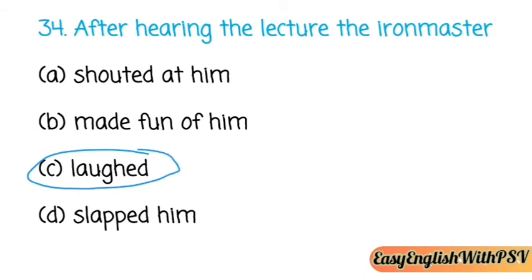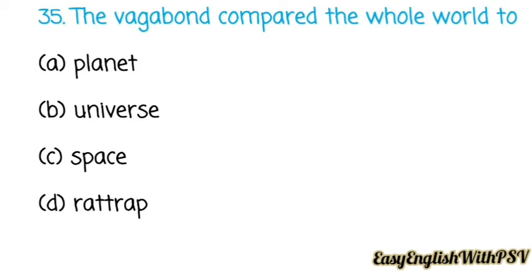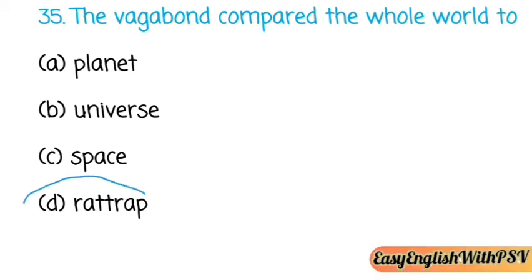Question number thirty-five: The vagabond compared the whole world to — a planet, universe, space, or a rat trap? We have already discussed a similar question. The correct answer is: he called the world a big rat trap.